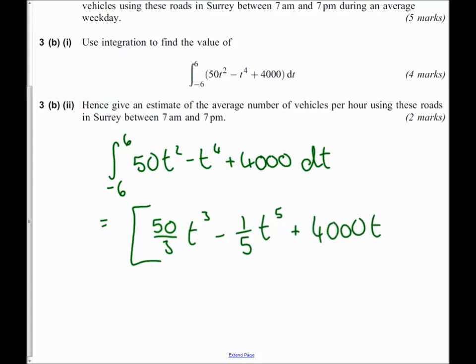And I'm not going to bother writing the c because I have limits. I'm stressing this because when you don't have limits, you absolutely must write in the c. If you're not sure, write in the c and let it cancel, but we don't need it because we're using limits.